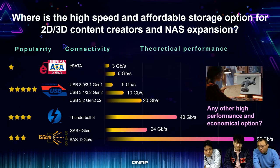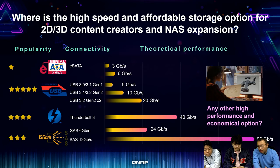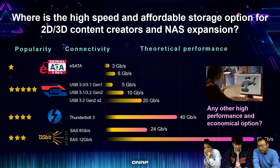USB 3.1 Gen 2 or 3.2 Gen 2 gives you 10 gigabit per second, and up to 20 gigabit per second with Gen 2x2. Our popular TR002 and TR004 are basically in the 5 gigabit and 10 gigabit connection speed range.